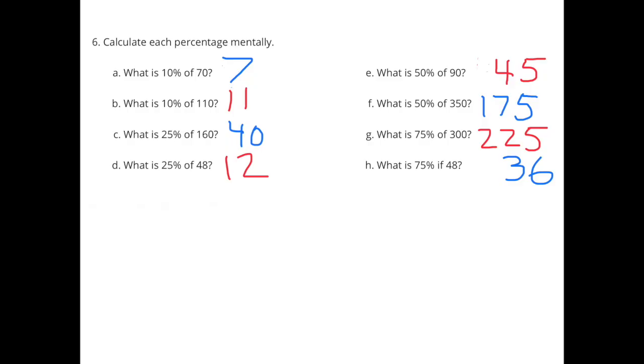G. What is 75% of 300? 75%? Well, that's 3 times greater than 25%. So instead of representing 1/4, that's going to represent 3/4. So what's 3/4 of 300? That would be 225.